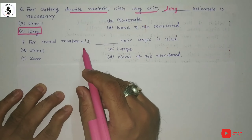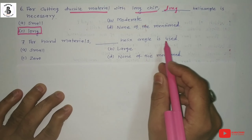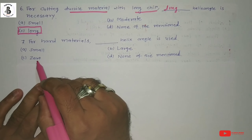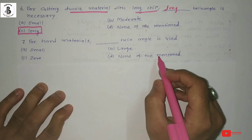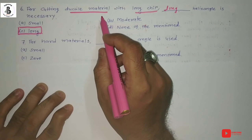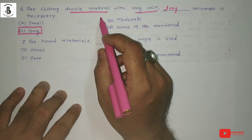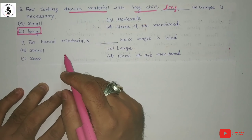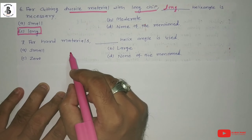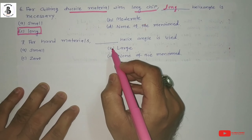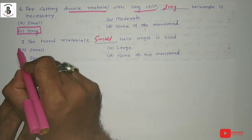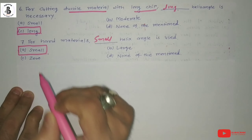Question seven: For hard materials, which helix angle is used? Option A small. Option B large. Option C zero. Option D none of the above. As already discussed, for ductile materials with long chips a long helix angle is used. For hard or brittle materials, a smaller helix angle is adopted so you can easily cut the material. So option A, small helix angle, is the answer.